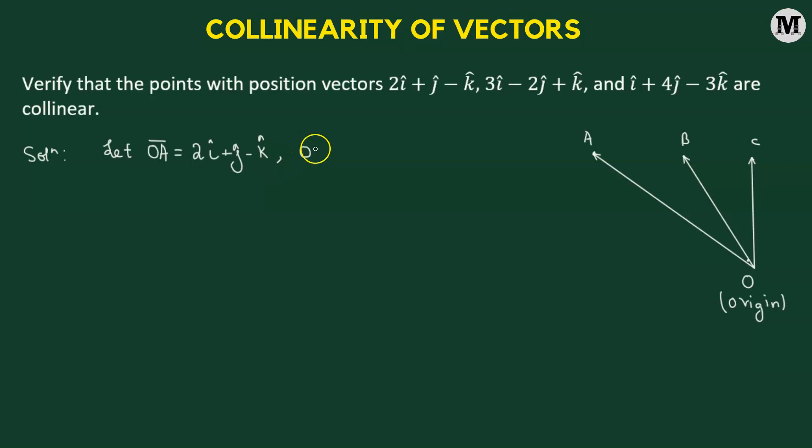Position vector of point B, which will be OB vector, is represented by 3i cap minus 2j cap plus k cap. And position vector of point C will be OC vector equals to i cap plus 4j cap minus 3k cap. Fine.